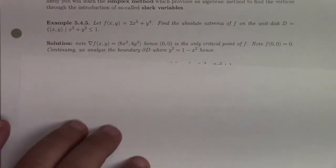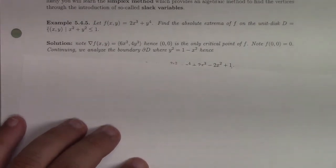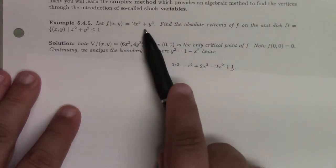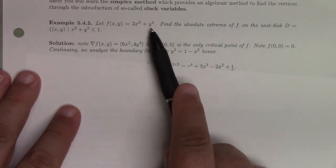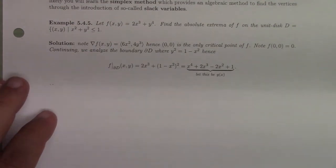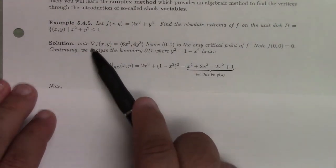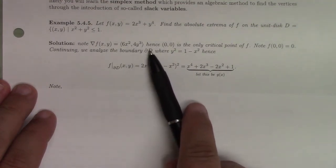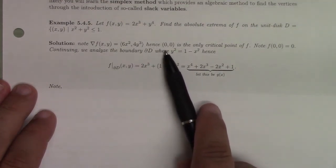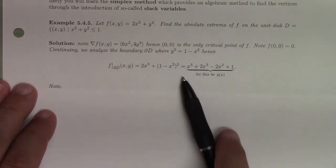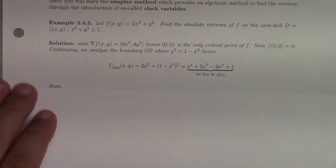Here's another good problem. Find the absolute extreme values of f. This is my f: 2x cubed plus y to the 4th on the unit disk. I gotta look for the local interior maximums, minimums. The gradient is this, so I only have to check the origin. The origin's my only critical point and it gives me zero. Let's keep that in mind for later.